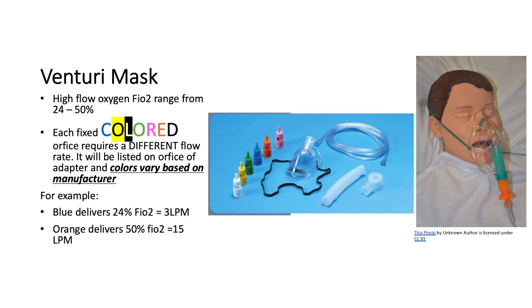The answer is venturi mask. This is a high flow oxygen mask that provides an exact FiO2 ranging from 24 to 50 percent. This mask contains an aerosol mask with a flexible tubing oxygen line that connects to the flow meter and a fixed orifice device with a variety of about six different colors, which can vary based on manufacturer. Each color provides a different flow rate, which will be listed on the adapter of the colored orifice. It also has a clear plastic cap that attaches to the fixed orifice as a safety guard to prevent obstruction events. Moving on to photo number seven.